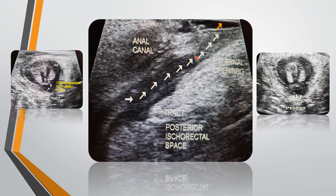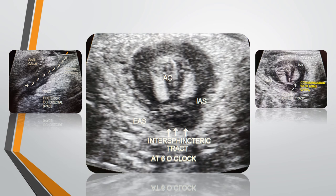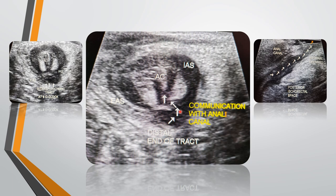First, the anal canal is screened in sagittal and parasagittal sections, then axial sections are taken. The transvaginal probe was kept on the perineum just above the anal opening at about 10 to 12 o'clock position. We can see the anal canal, the internal sphincter, and the external sphincter. The same tract is located at 6 o'clock position, between the internal and external sphincter — it has not crossed the external sphincter. This is therefore an intersphincteric type of perineal fistula with no abscess around the tract. The tract is seen communicating with the anal canal at about 5 o'clock position.